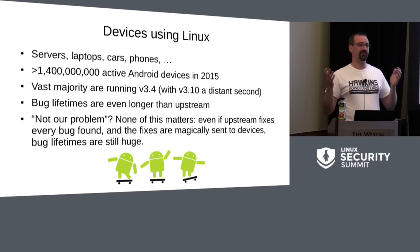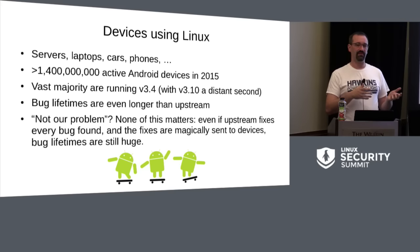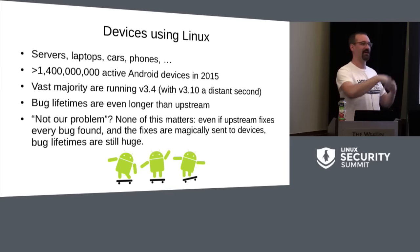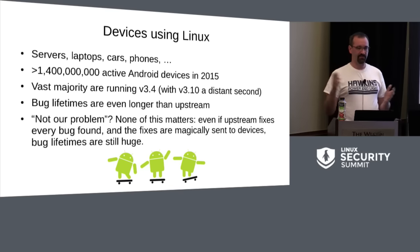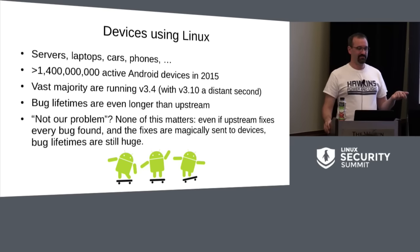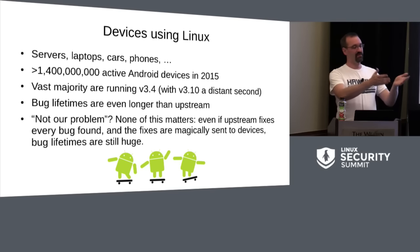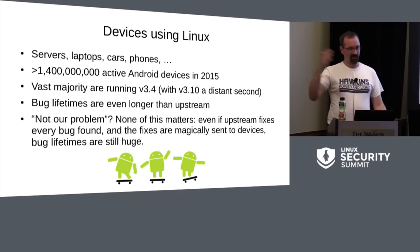Even if upstream says a bug is fixed, you have to ask: what kernel version was it fixed in? Did it end up in a stable release? Did a vendor backport it? Did the carrier take that update and push it out to phones? There's a very long lifetime potentially. With IoT, you might install something in your door lock and leave it there for 15 years — very long device lifetimes.